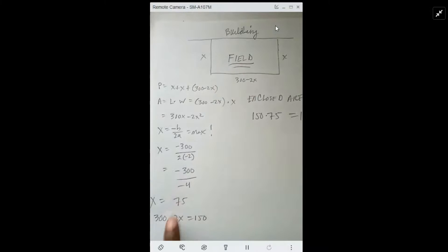We'll find this by just subtracting, so the short length gives me 75. The long side of the field is 150.